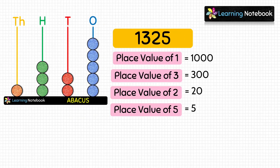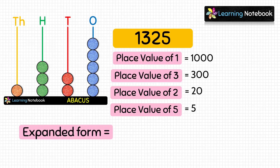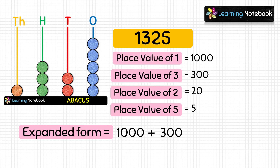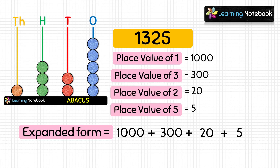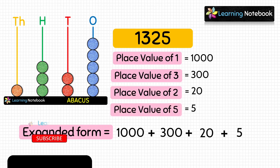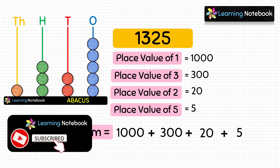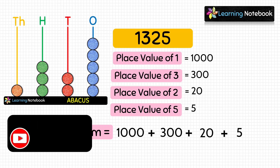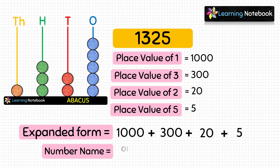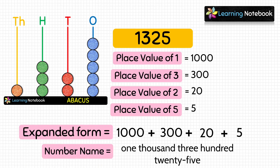Now students, we have the place value of all the digits. Let's write the expanded form, which is the sum of the place values: 1000 plus 300 plus 20 plus 5. Now we can easily write the number name: one thousand three hundred twenty-five.